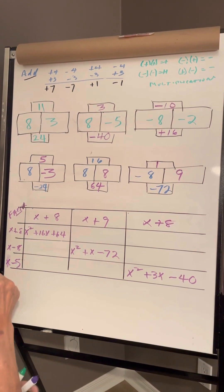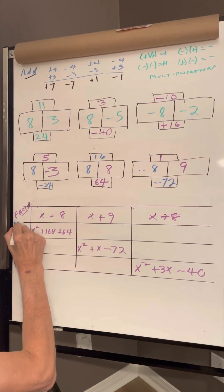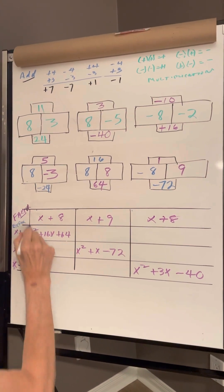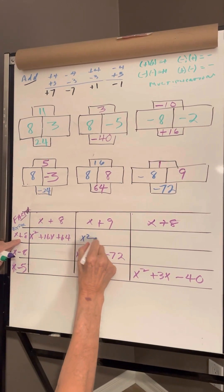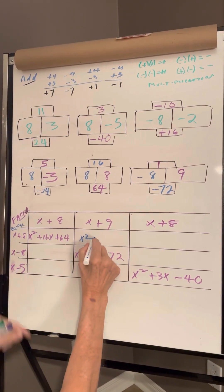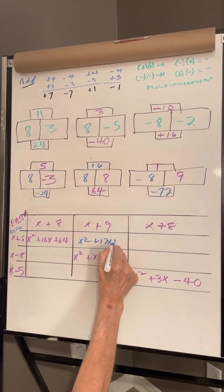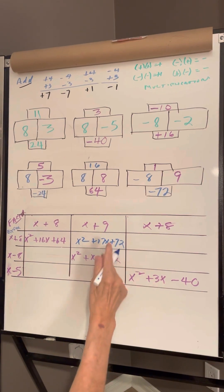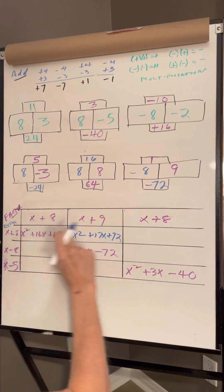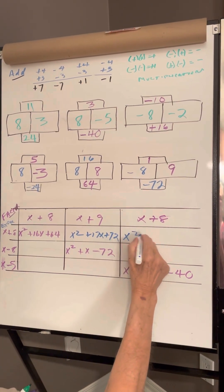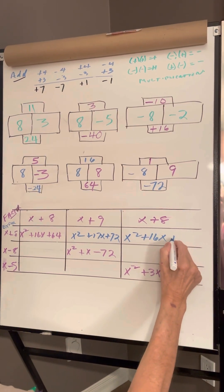That was called factoring. Now we're going to expand, which is multiply. So this times this is going to be x squared, x times x. 9x and 8x is 17x. 8 and 9 is 17. And 9 times 8 is 72. There are no negatives in that scenario. There's no negatives here either. So this is the same as this: x squared. 8 and 8 is 16. And 8 times 8 is 64.